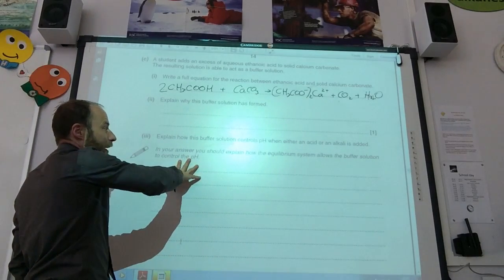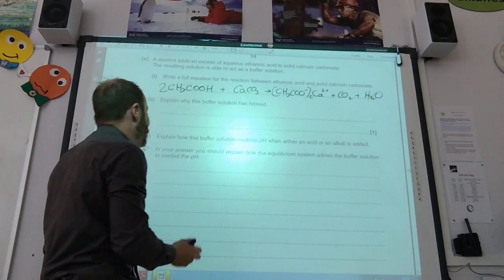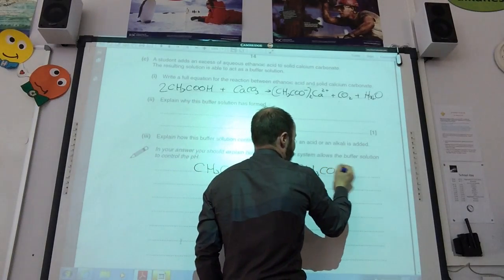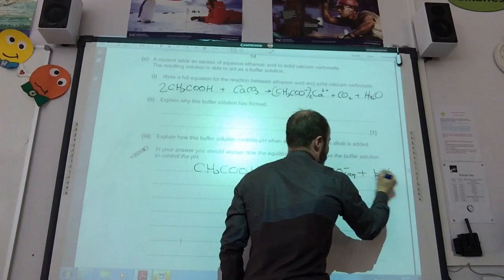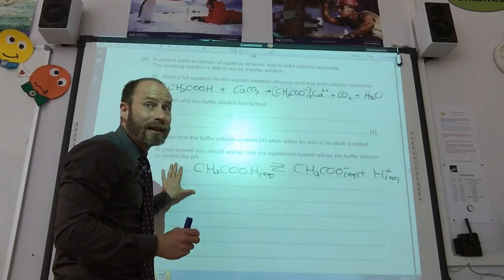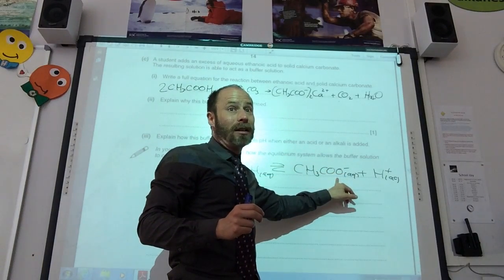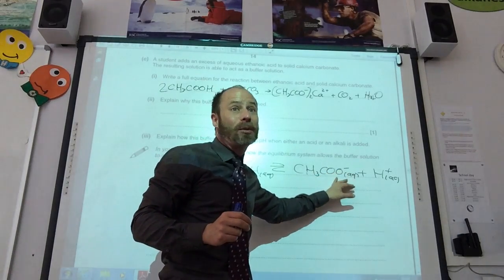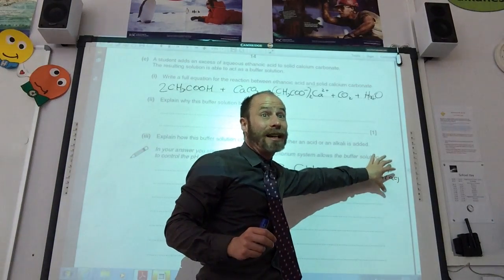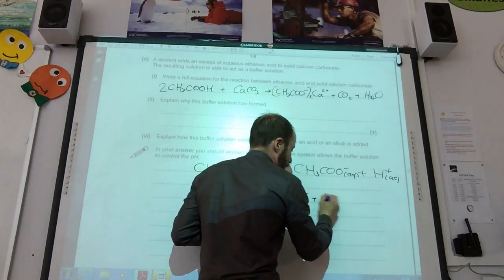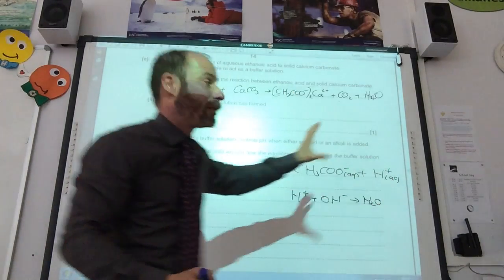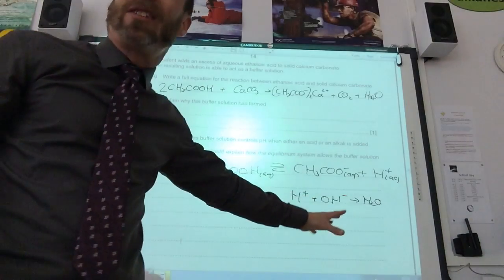Explain how this buffer solution controls pH when either an acid or a base is added. Always put your equilibrium in that you are talking about. If I add H+, the ethanoate ion will react with the acid H+, and it will shift to the left-hand side to remove it. If I add hydroxide ions, the hydroxides react with H+, they will be removed from the solution, and the equilibrium will shift to the right-hand side. This is worth 5 marks, it's just basic buffer theory.